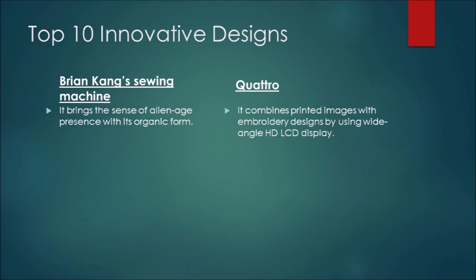Number three: Brian Kang sewing machine. It was made in an organic shape so that it brings a sense of elegant presence.